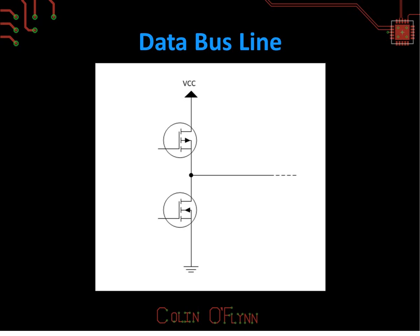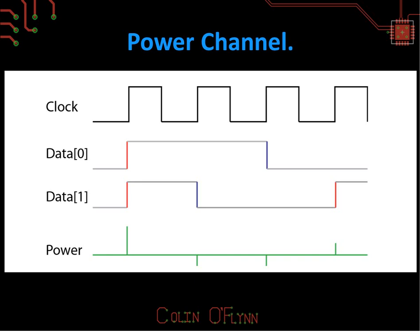Those data bus lines can also be thought of as a capacitor — to put them in a state, we have to put charge on the line, or charge and discharge this capacitor. We know that physically changing the voltage of this capacitor, putting it to 1 or 0, takes power. It takes a finite amount of charge to change the state of that data bus line. Because it's digital logic, everything is synchronized to a common clock, so at one clock edge, all of those data bus lines switch at once.